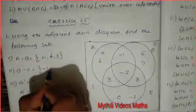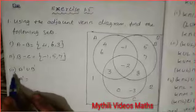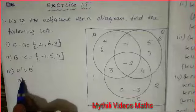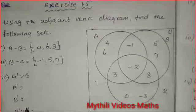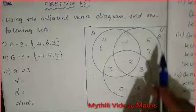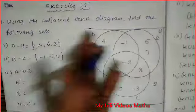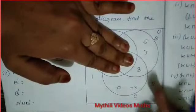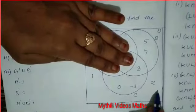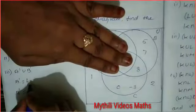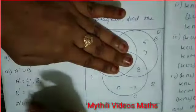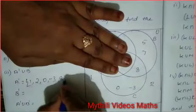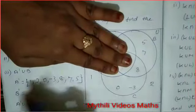Third question: A' union B'. First we find A', then B', and then combine them. A' means from the universal set, subtract the full A set. The universal set includes the outside numbers 1 and 2. So A' = {1, 2, 0, -3, 8, 7, 5}.